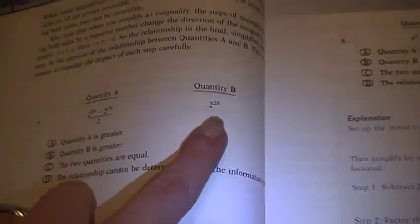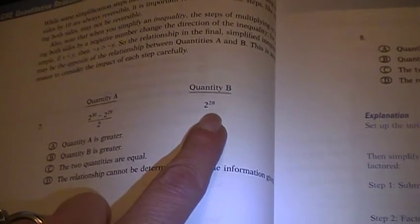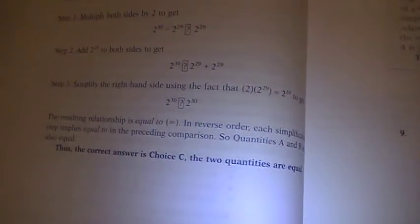Well, it turns out that 2 to the 28th is half of 2 to the 29th, and it doesn't look like it should work that way, but it does. So this one actually comes out to the two are equal, choice C.